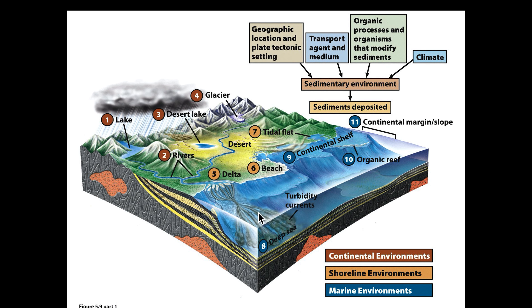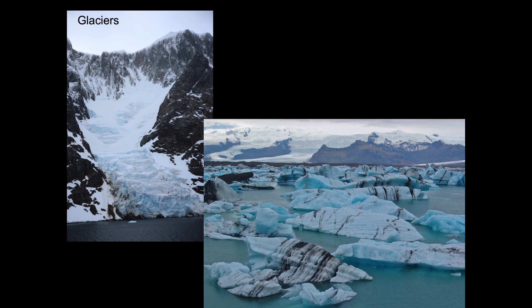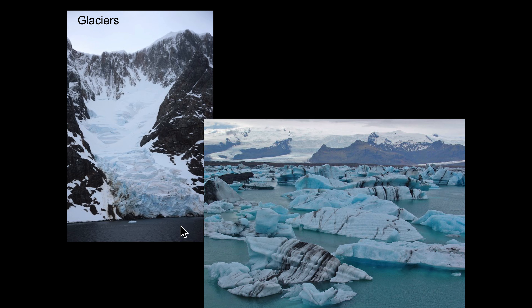Here we have an example of glaciers in Antarctica — the Antarctic Peninsula. You can see a very short but very active glacier ripping away pieces of the surrounding rock, and all this material is going to be dumped into the Southern Ocean as the ice falls into the water and melts.